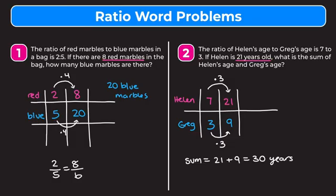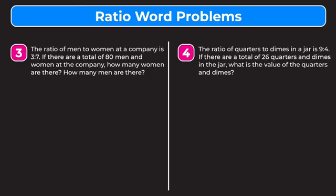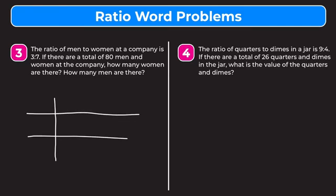Let's go through two more examples. Example three says the ratio of men to women at a company is three to seven. If there are a total of 80 men and women at the company, how many women and how many men are there? This problem is a little different because they gave us the total number, not the individual counts. So we need to make three rows in our table: men, women, and total.